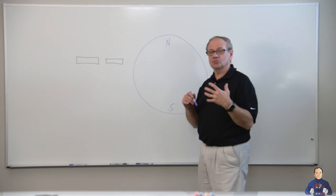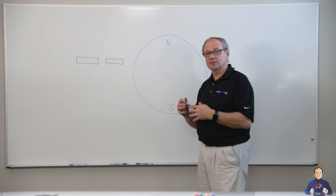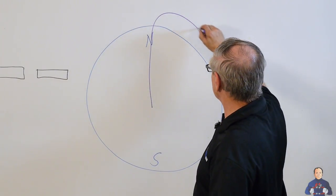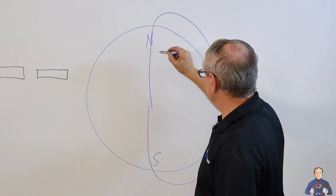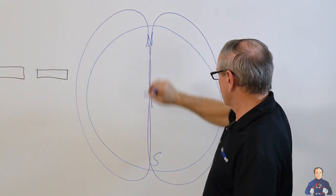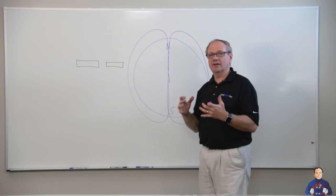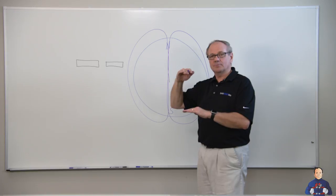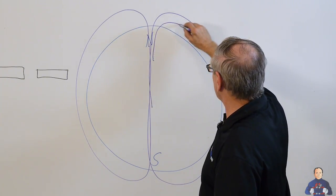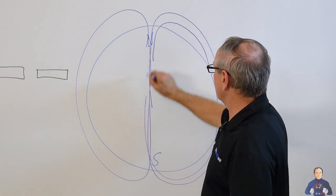NASA has got some photographs that you can look at online and this is something that they've been monitoring for many years. The way that the earth's magnetic field looks is it goes around like this. It comes out of the north pole and the south pole. That's the top of the earth and the bottom of the earth. We see the lines of flux come out and go around.